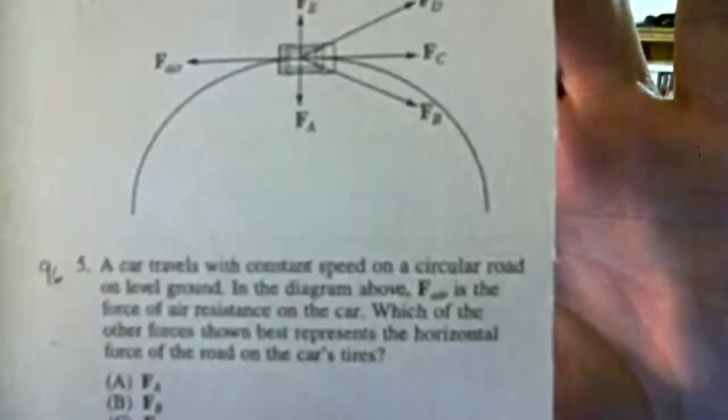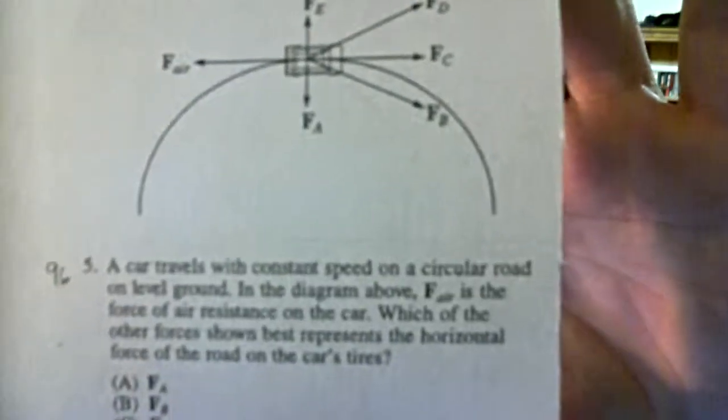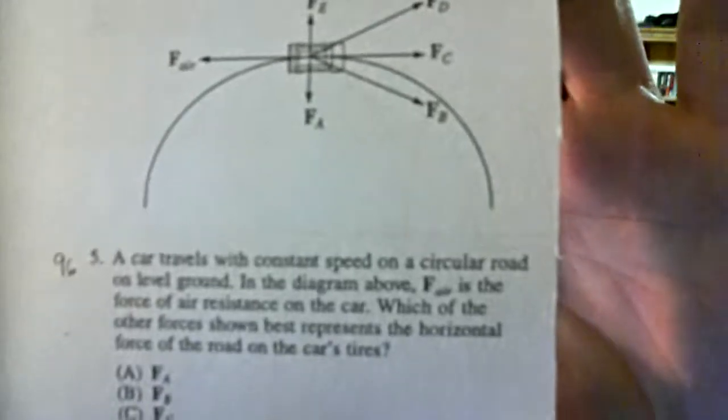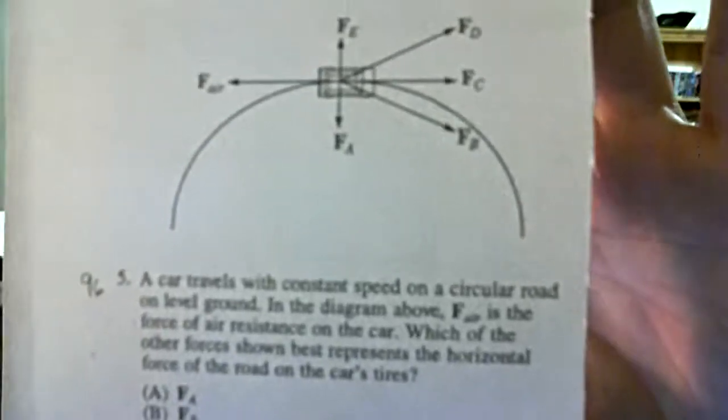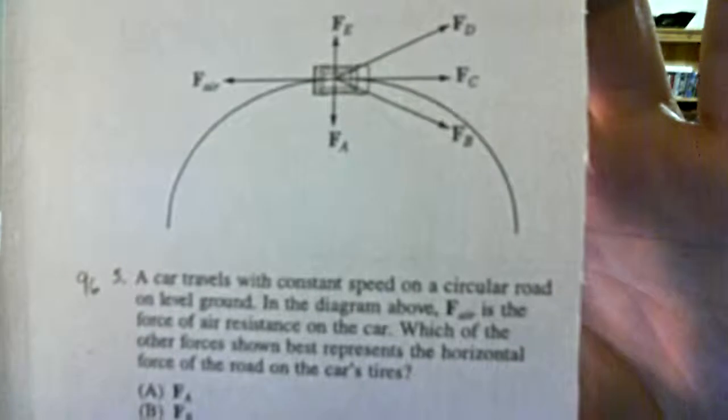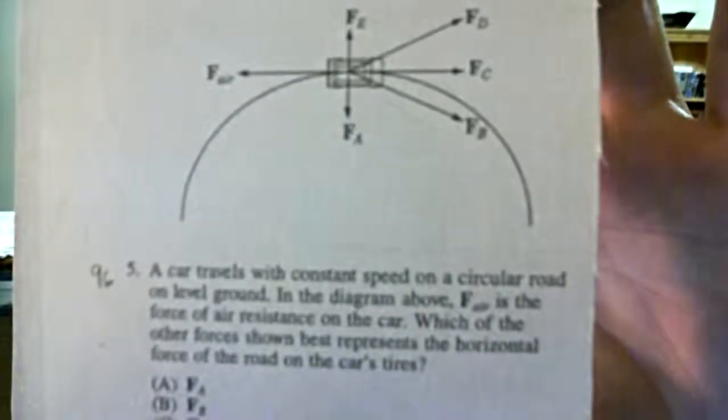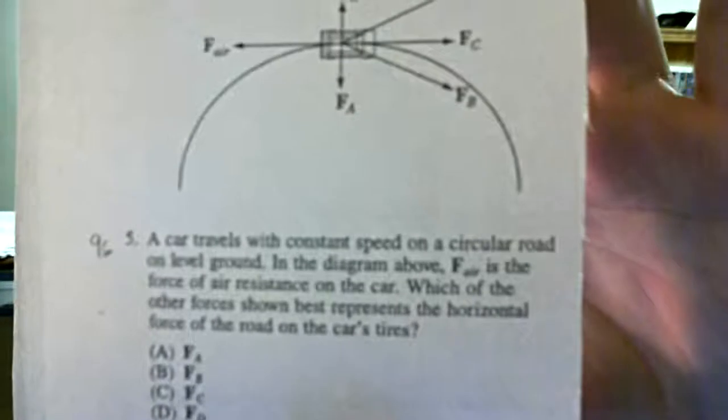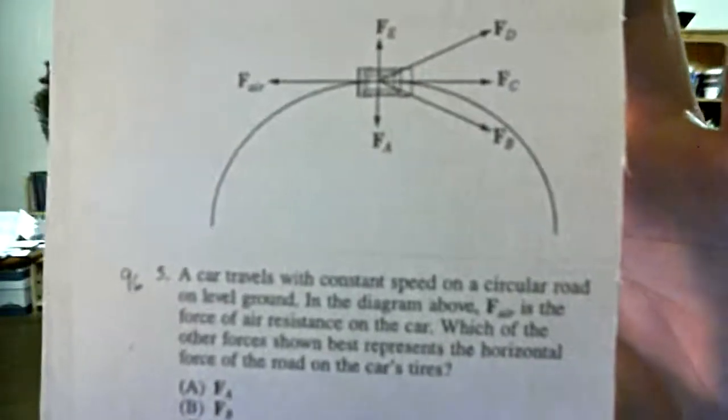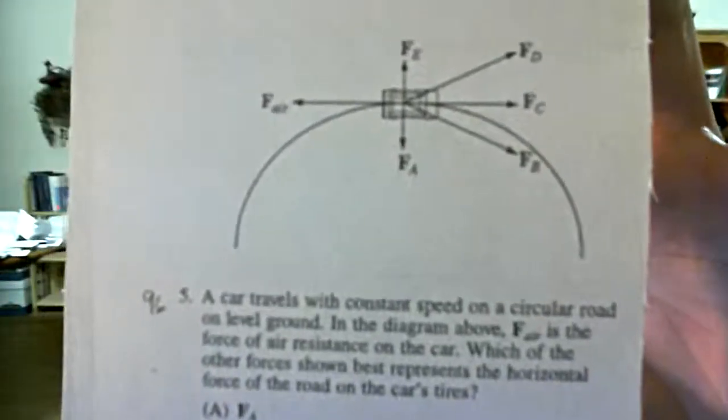Number five: a car travels with constant speed on a circular road on level ground. In the diagram above F_air is the force of air resistance on the car. Which of the other forces shown best represents the horizontal force of the road on the car's tires?